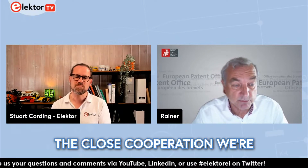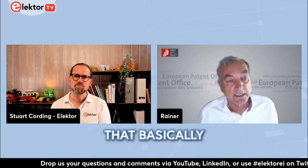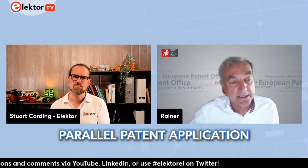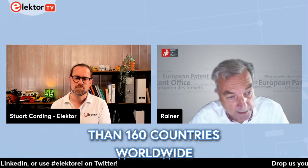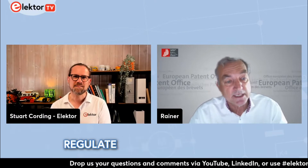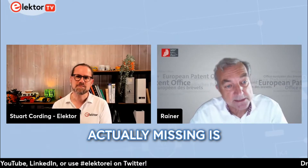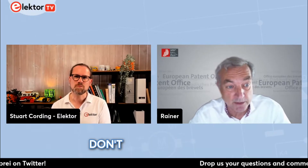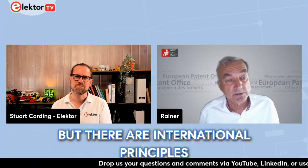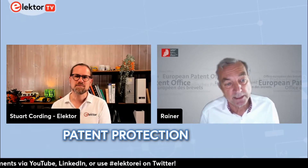There is close cooperation with the United States, the Chinese, Japanese, and Korean offices, and also with the World Intellectual Property Organization in Geneva — a UN body governing a contract that allows a parallel patent application simultaneously in more than 160 countries worldwide. There are a number of contracts and agreements in place that regulate how a worldwide patent application scheme can function. We don't have a world patent or a world patent office, but international legal and technical principles ensure more or less the same understanding of patent protection around the world.